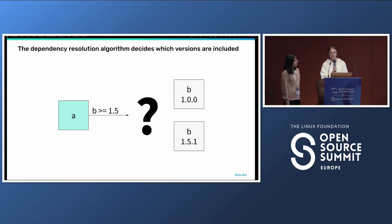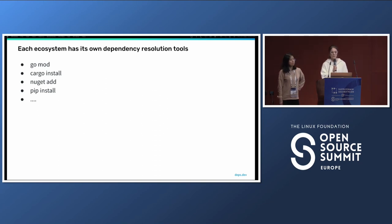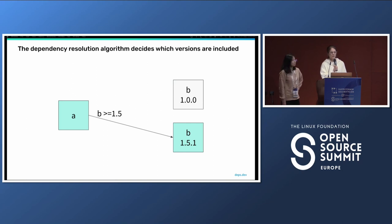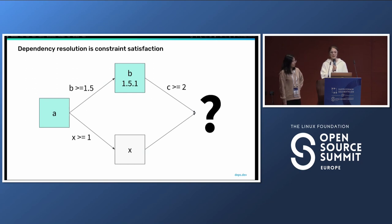You specify your dependency on B in the form of requirements. Here my project A depends on package B at any version greater than or equal to 1.5. We can see there are two versions of B available: version 1 and version 1.5.1. It's the responsibility of the dependency resolution algorithm to take those requirements, look at the available versions, and determine which one should be included in your dependency graph. Each language ecosystem has its own dependency resolution tools — like go.mod, cargo install, nugget add, pip install — and it's the job of these tools to resolve requirements to versions. Your dependencies can also have common dependencies, which is why we talk about a dependency graph, not a dependency tree.